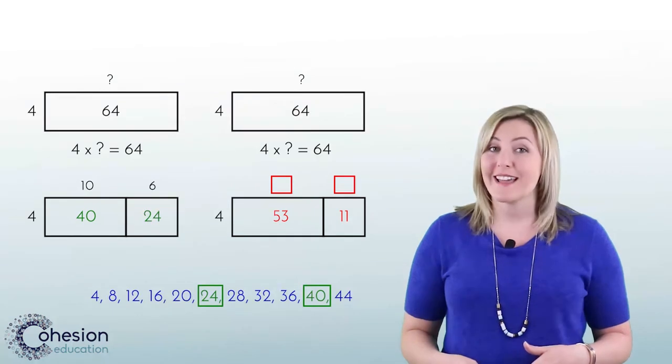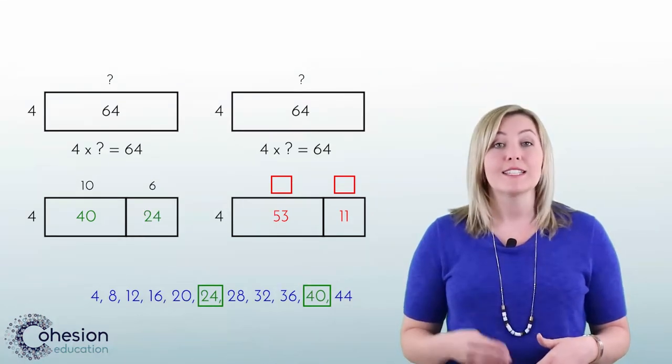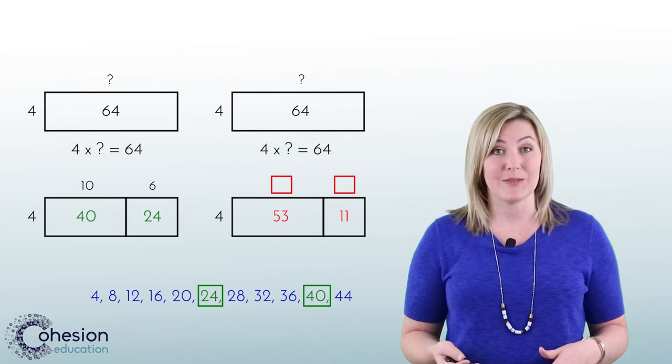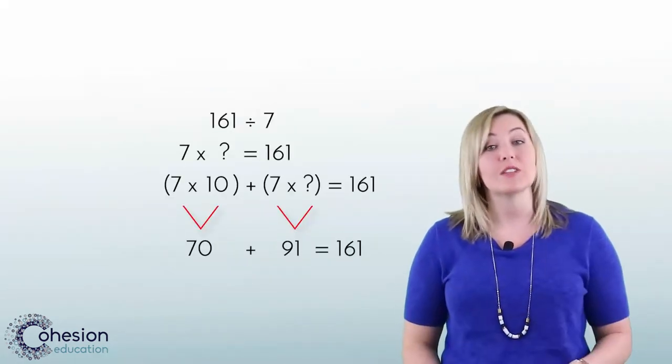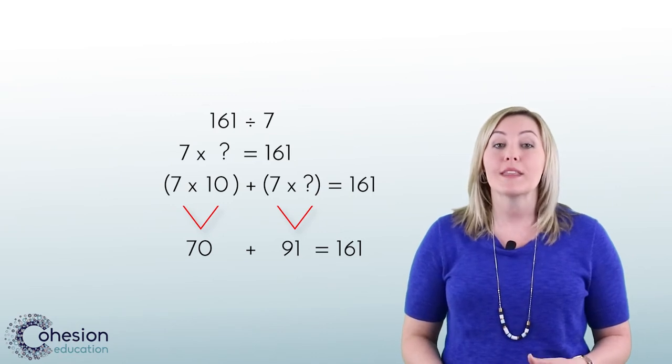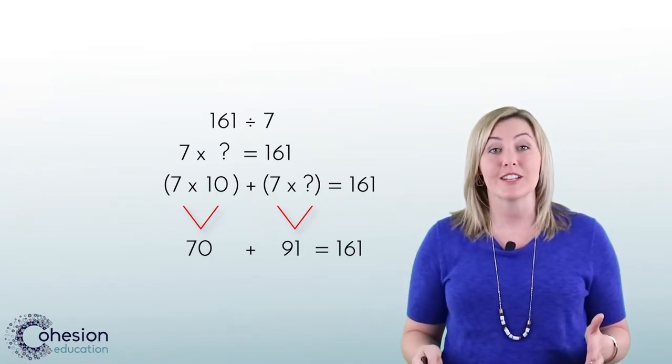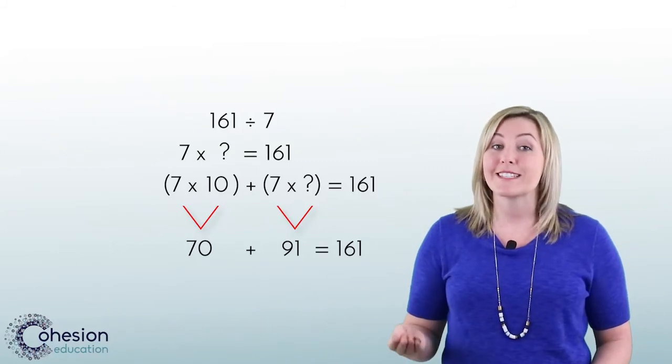To address this error, have students write out the multiples of 4 to check that the numbers can be easily worked with. Another common error that can occur is when a student uses the distributive property with a number that is larger, and they do not split it large enough the first time.